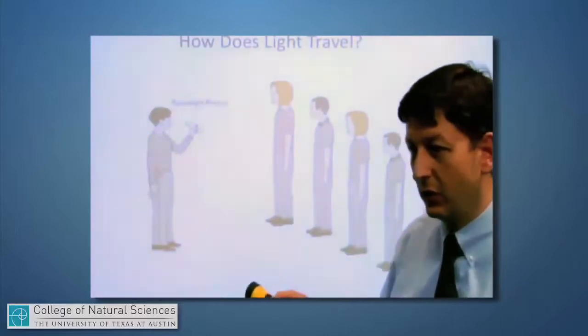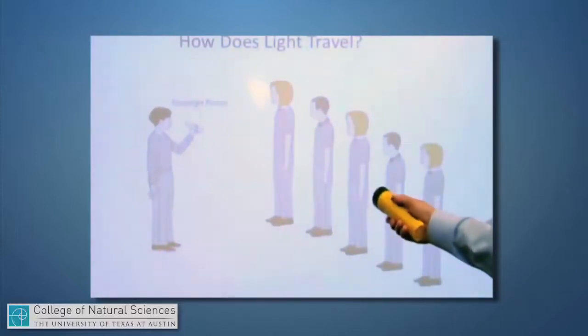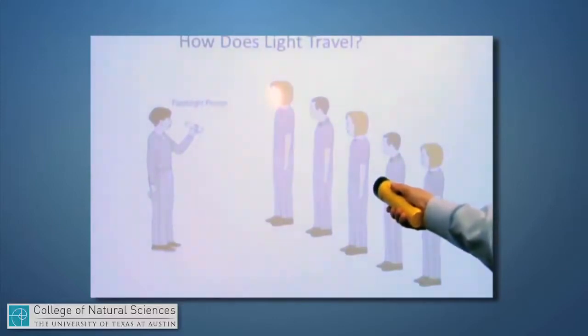Just like if I stand over here and I shine my flashlight at the first individual, you can see that that flashlight beam is pretty much aimed straight at one person and the other people aren't affected at all. Yes, the room is illuminated a little bit by this light, but the flashlight is aimed right at one person; it's traveling like a beam.